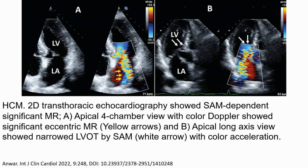This is the HCM case with a 2D image. Transesophageal echocardiography shows SAM-dependent significant mitral valve regurgitation. A: Four-chamber view with color Doppler shows significant eccentric mitral regurgitation. B: Parasternal long axis view shows a narrow left ventricular cavity.